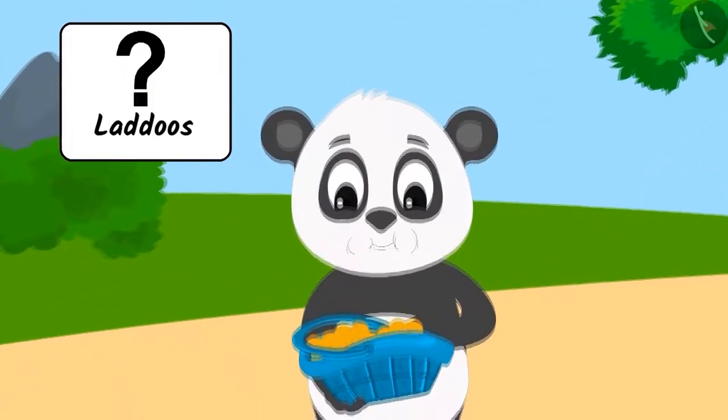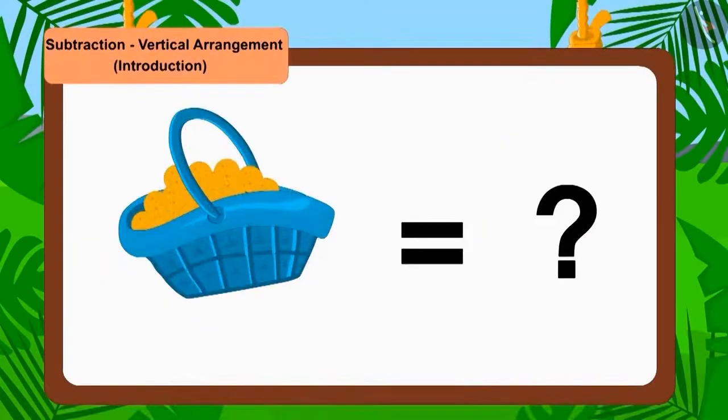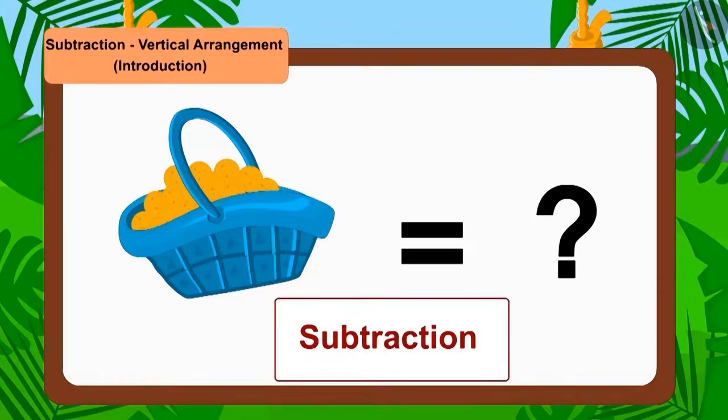Now, how many laddos were left for Tufan? Children, can you tell how many laddos are left in the basket? To find out the remaining laddos in the basket, we have to use the subtraction process. Come, let us do this subtraction by writing the numbers vertically.